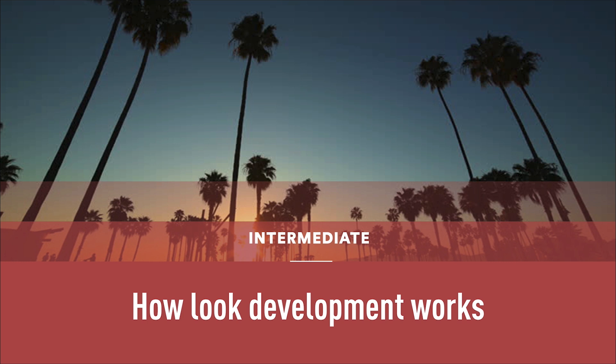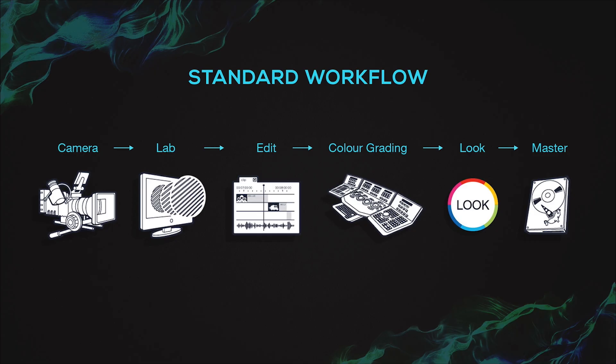In order to understand why we need show LUTs, let's look at how production has changed in recent years and why we need look development very early in the stage of production. This is what we call a standard workflow — the practice we had before we entered the stage of the Cololab-managed workflow. What we used to do is just shoot and try to get a look as good in camera as possible.